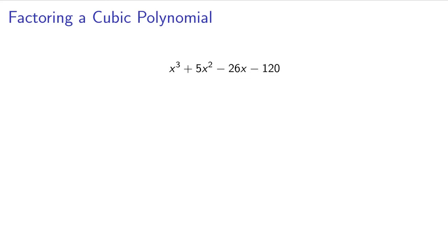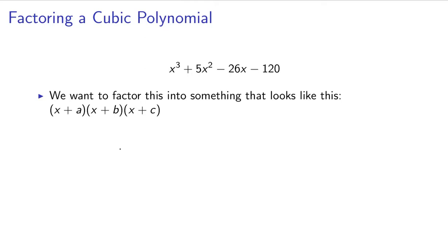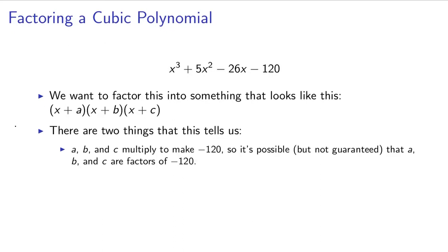So let's say we want to factor this cubic polynomial. When we factor something, we want to factor it into something that looks like this: (x+a)(x+b)(x+c). When you look at what this end goal is going to look like, this tells us two important things about how to get to that end goal. The first thing it tells us is that a, b, and c multiply to make negative 120.